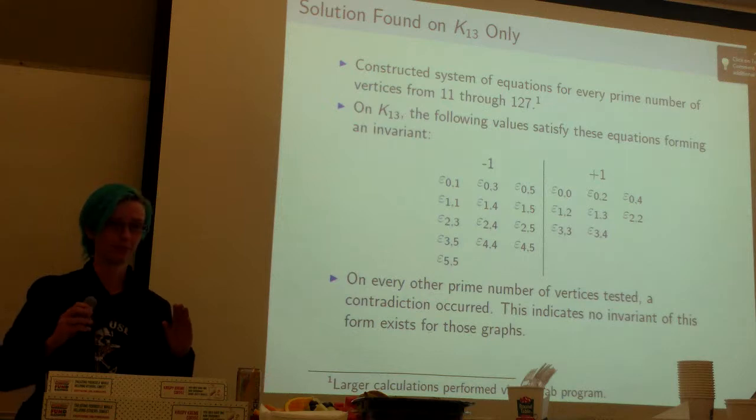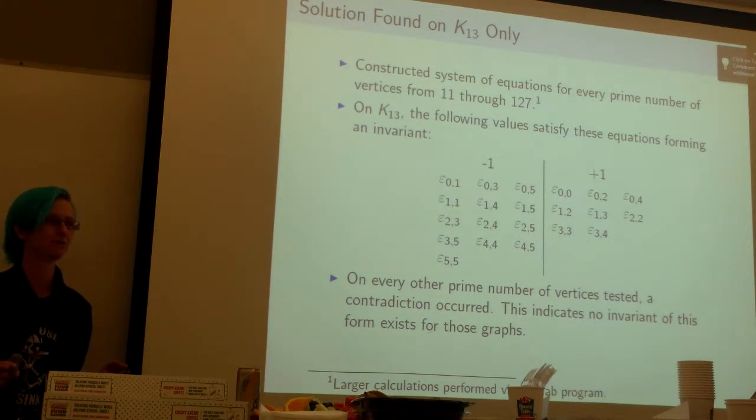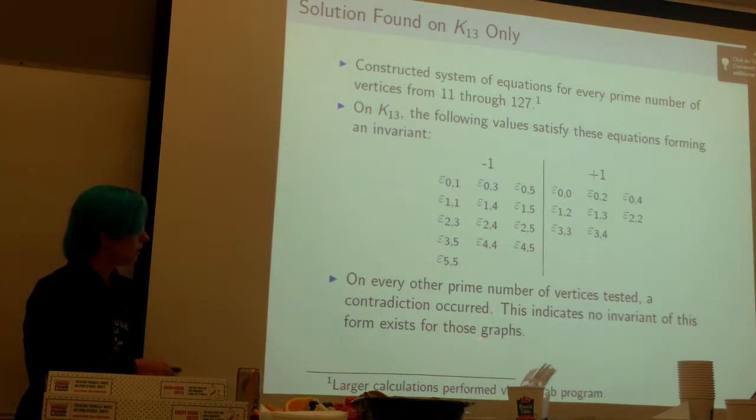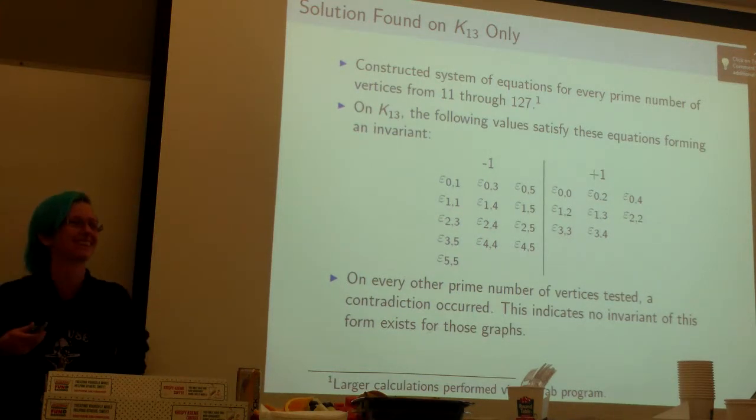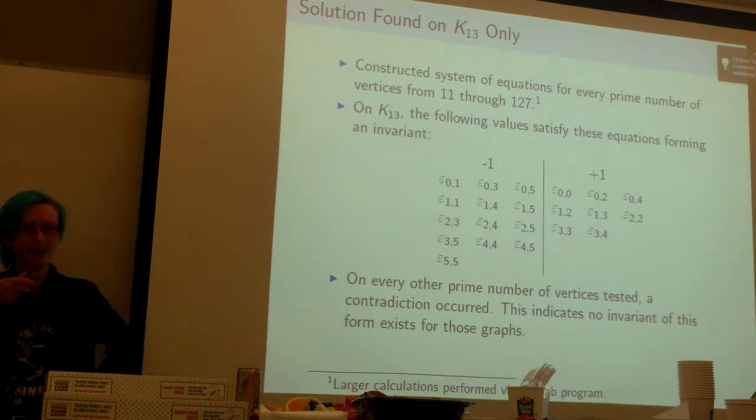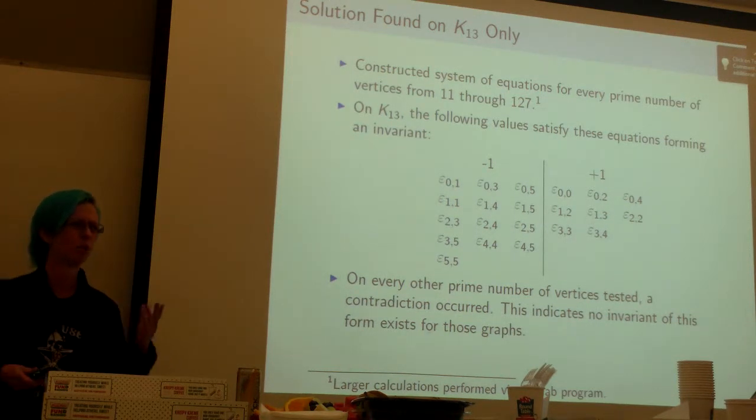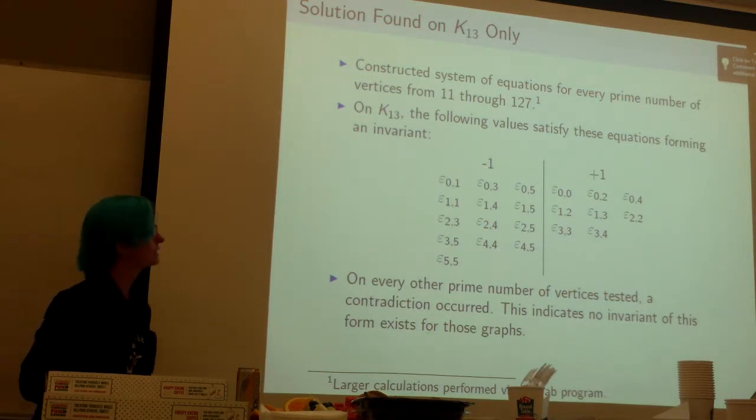So it matches all the equations for satisfying the Reidemeister moves, it's an invariant, hurrah. But why? Why does this one work? Why don't the other ones work? So that's my open question at this point. Why would just these numbers work and not everything else? I have no idea.